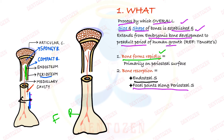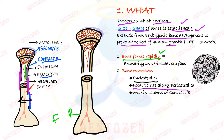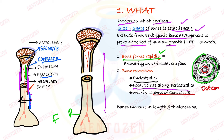Resorption can also occur in compact bone, which forms the cortical plates. Compact bone is made up of the Haversian system, where bone is arranged in layers around a central canal containing vessels — this is called osteon arrangement. Within this osteon of compact bone, resorption can also occur. Increase in bone length and thickness occurs only when bone formation is greater than resorption.